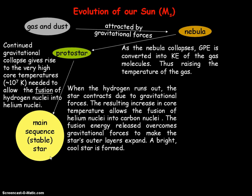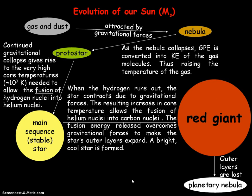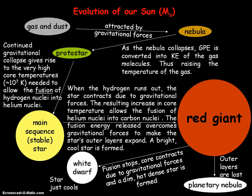This allows the star's outer layers to expand, forming a very bright but cool star — the red giant stage. When the outer layers are lost from the red giant, planetary nebulae are formed. When fusion stops, the core contracts due to gravitational forces, forming a dim, hot, dense star — the white dwarf. The star will then cool down to eventually become a black dwarf, no longer emitting light because it's too cold.